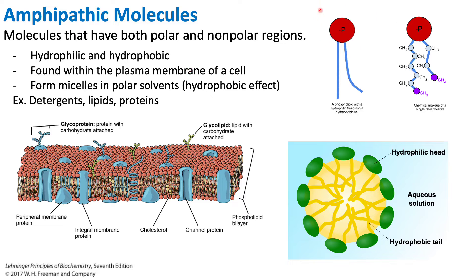The phosphate head group consists of the phosphate atom with oxygen bound to it. Since it has that oxygen bound to it, the phosphate and the oxygen have a high electronegativity difference — they are polar, and they contribute to the hydrophilic character of the phospholipid.